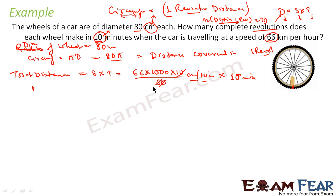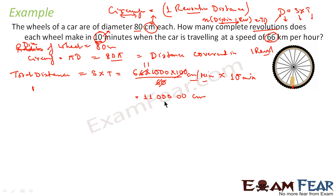After canceling the 6s and simplifying, we get 11 followed by five zeros — that is, 1,100,000 centimeters. So the total distance covered by the car in 10 minutes is 1,100,000 centimeters.